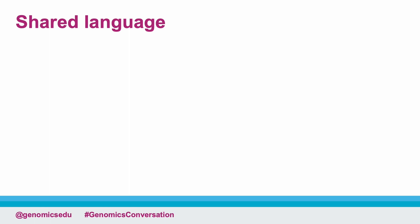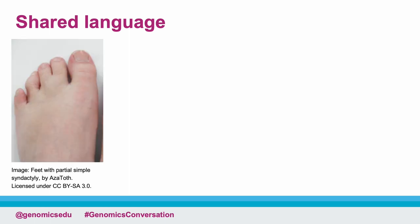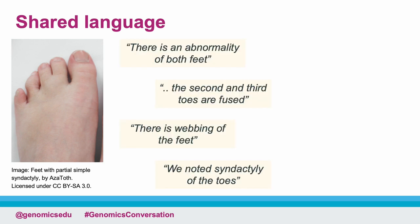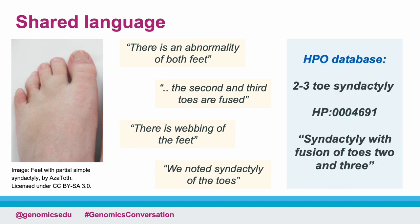Let's look at an example. This image shows a patient seen in clinic with an abnormality of their toes. Without guidance, it's inevitable that different clinicians will use different descriptions of this clinical feature. A few examples are shown here. But the HPO database has guidance for this clinical scenario, suggesting the use of the description '2-3 toe syndactyly'. Using this guidance encourages precision and ensures that all clinicians are speaking the same language when it comes to phenotype.